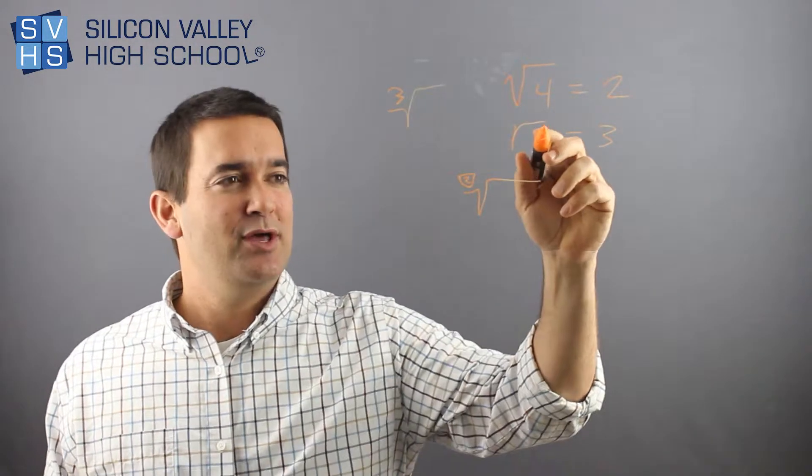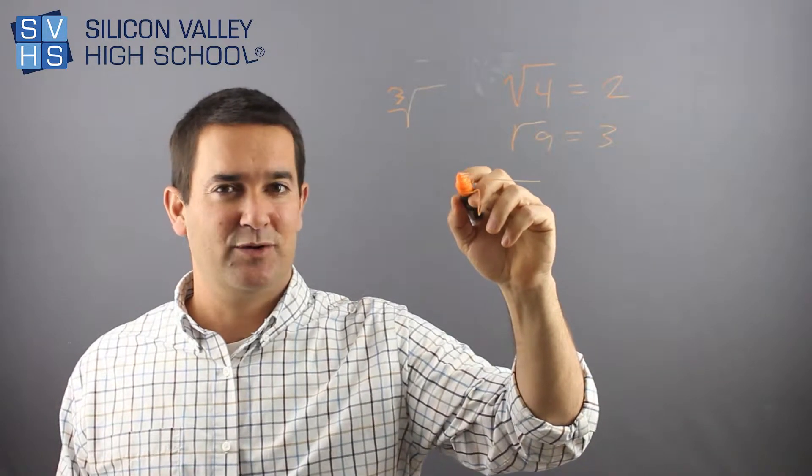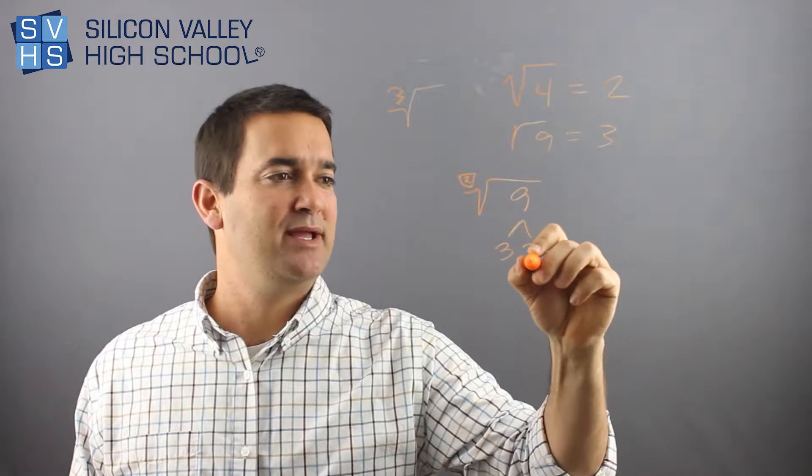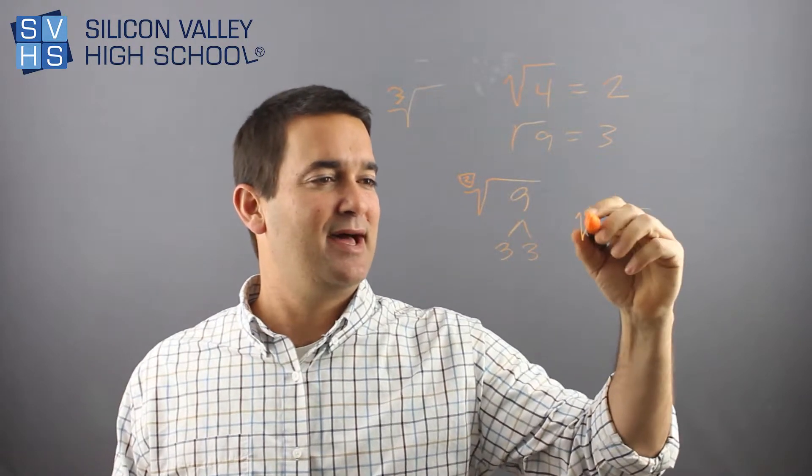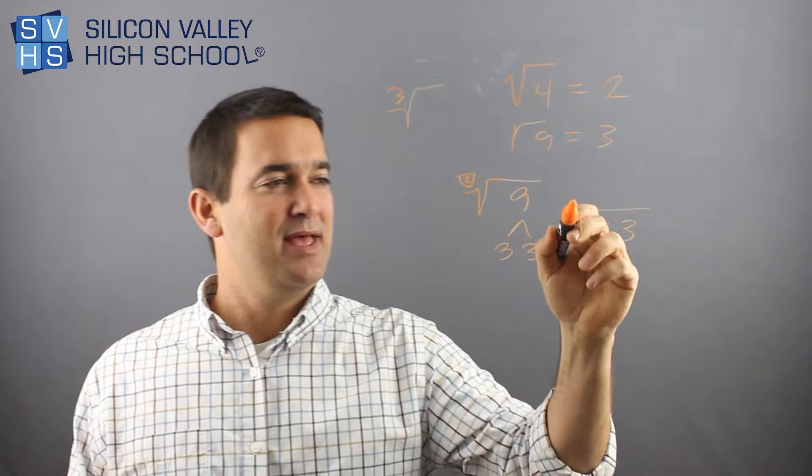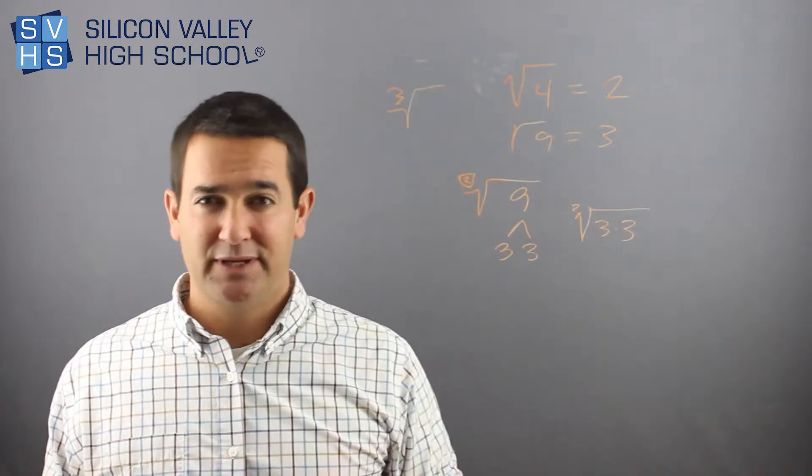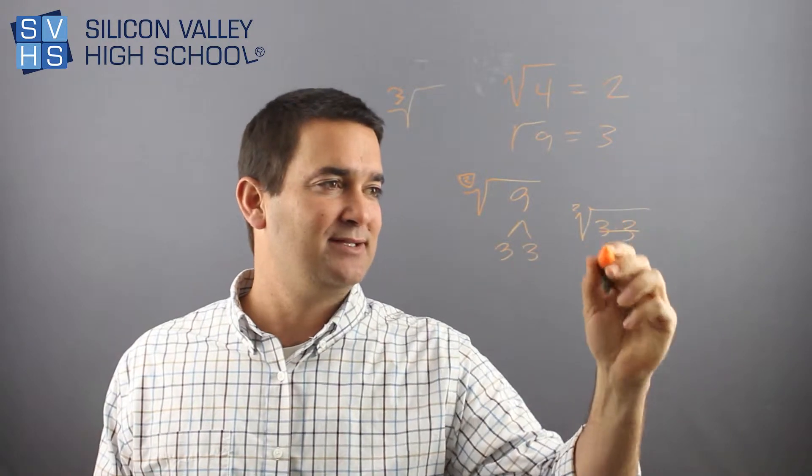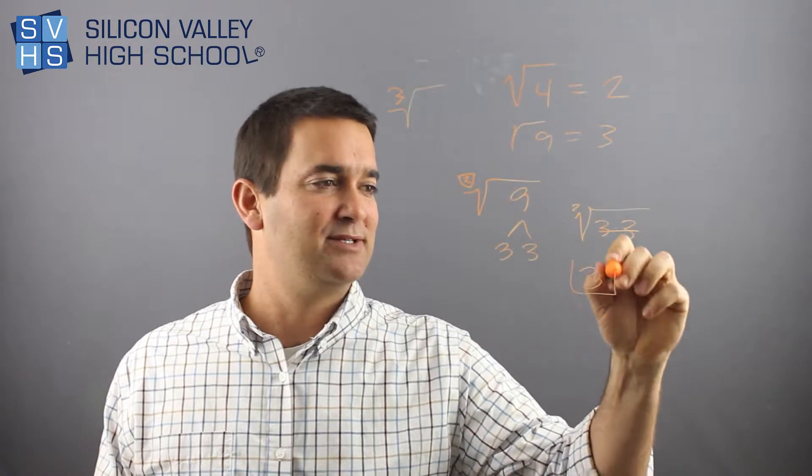And so what that means is you're looking for this many grouped together. So in the case of root 9, if I factored this out, it would be 3 and 3. So I could rewrite that as 3 times 3. And because there's a 2 here, I'm looking for groups of 2. There's a group of 2. It's a miracle. The answer is it comes out, and the answer is 3.